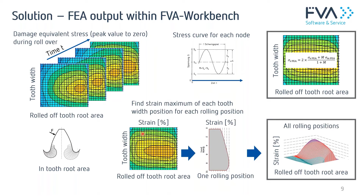The second quantity in the tooth root area is strain. For plastic materials, strain can be larger than we're used to from steel, so it's important not to exceed a certain value. We plot strain over the tooth width and rolled-off tooth root area, project over each mountain to get maximum values per tooth width coordinate, and summarize all rolling positions to see strain over the full rollover scenario.